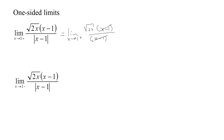Now we can cancel, so this becomes the limit as x tends to 1 from above of the square root of 2x. As x gets closer and closer to 1, this gets closer and closer to the square root of 2. So the right-hand limit is the square root of 2.